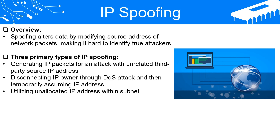Another approach involves disconnecting the owner or user of an IP address through a denial-of-service, DOS, attack, and then assuming that IP address temporarily on the attacker's system. This creates a two-way communication channel for the attacker to access information from the main target. After the attack concludes, the IP address returns to its original usage by the authentic system. Nevertheless, the log files attribute the attack to the unsuspecting third party who was originally assigned the IP address, rather than the malicious system.